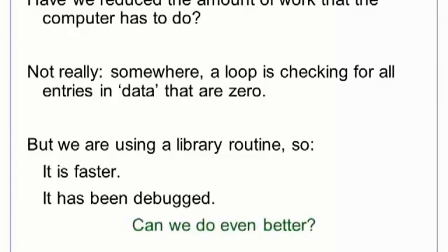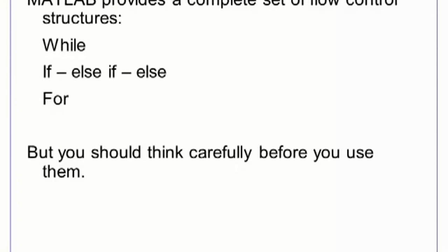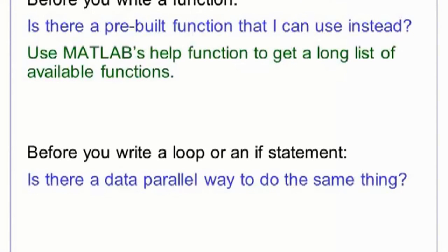Our new function has less loops but it does not change the theoretical workload of the computer. Some loop somewhere has to go through every value and test whether it is zero, but that loop was written by someone else and embedded in MATLAB's find function. This loop will be faster and less buggy than anything we can write, which means we should take advantage of it. Rather than loop through values of the arrays i and j, we can use the lesson learned in the episode on array indexing to interpolate all the missing values in one line. To review, MATLAB provides a complete set of flow control structures including while loops, if-else-if loops, and for loops. In MATLAB, as in all data parallel languages, loops should be used to control the general flow of the program but should probably not be used to iterate through every element of a data structure. It is best to use built-in functions for those tasks. Before you write a loop or if statement in MATLAB, you should ask yourself if there is a data parallel way to accomplish the same task.